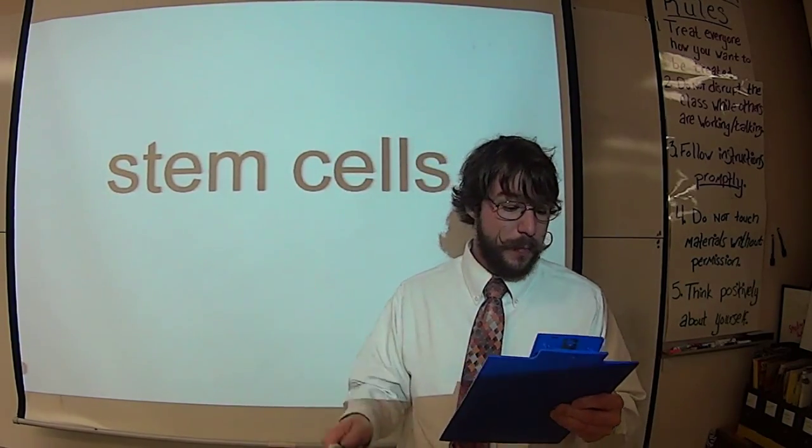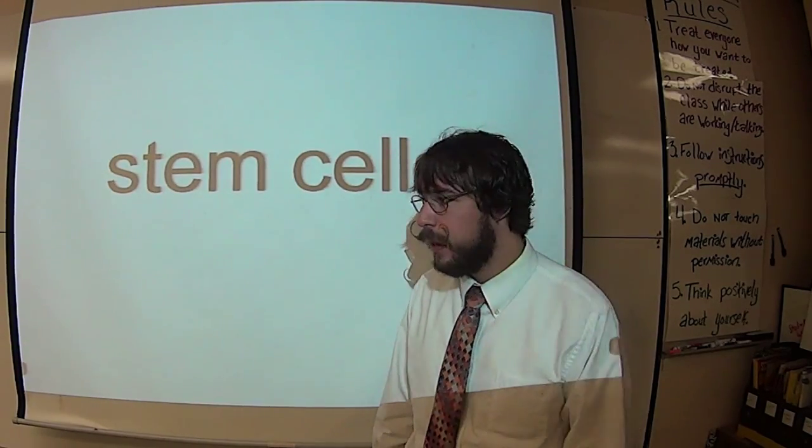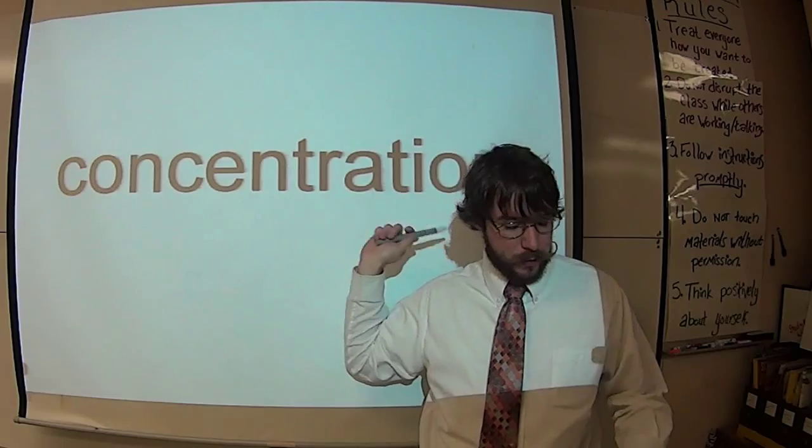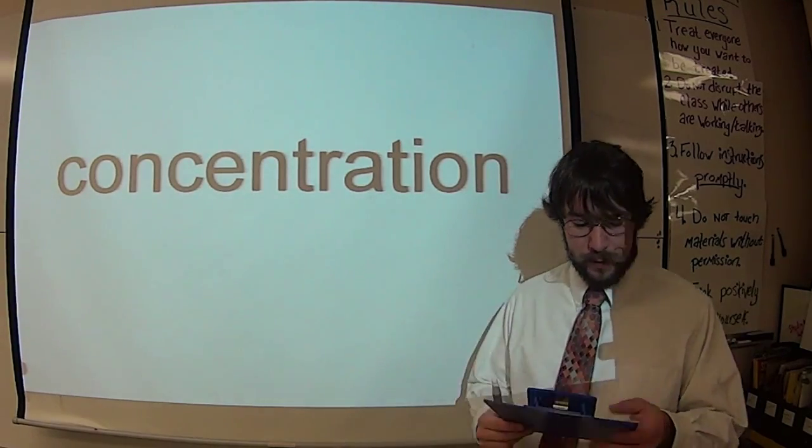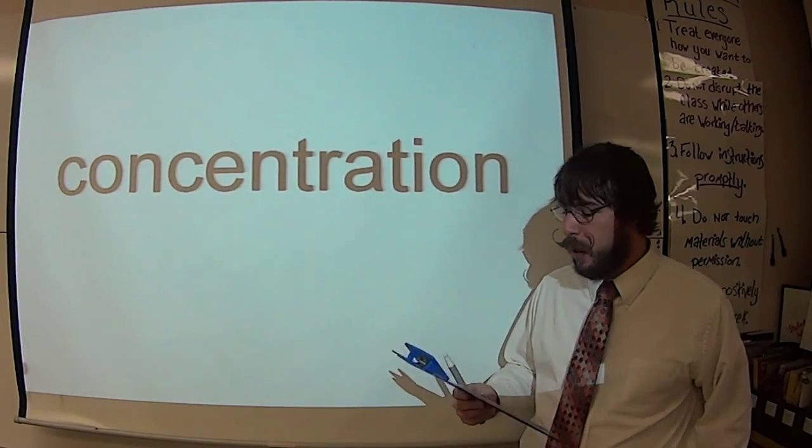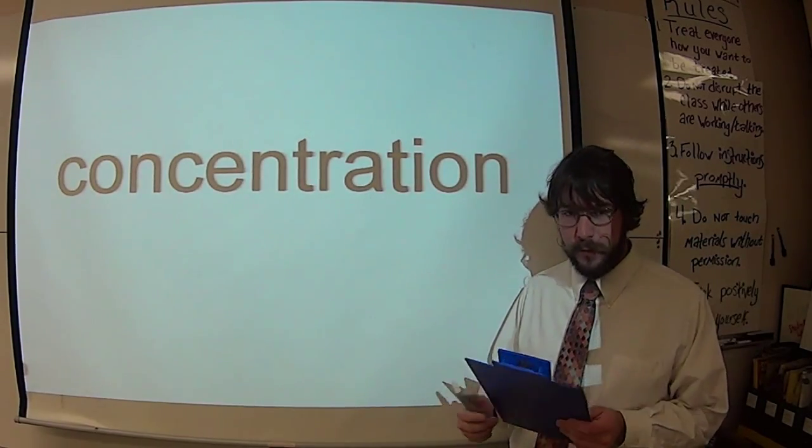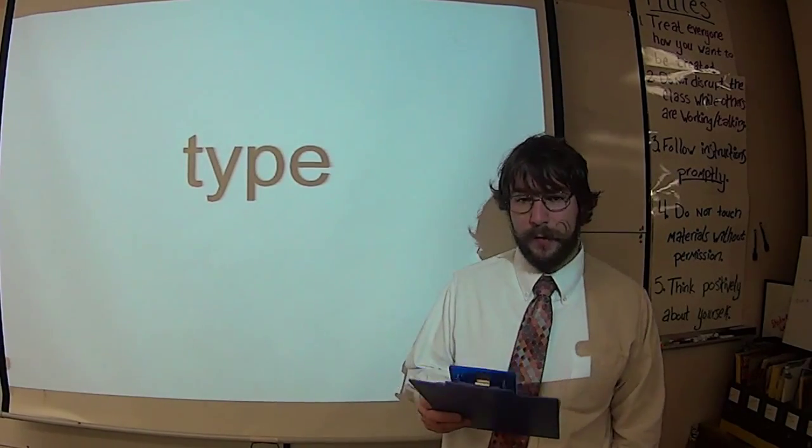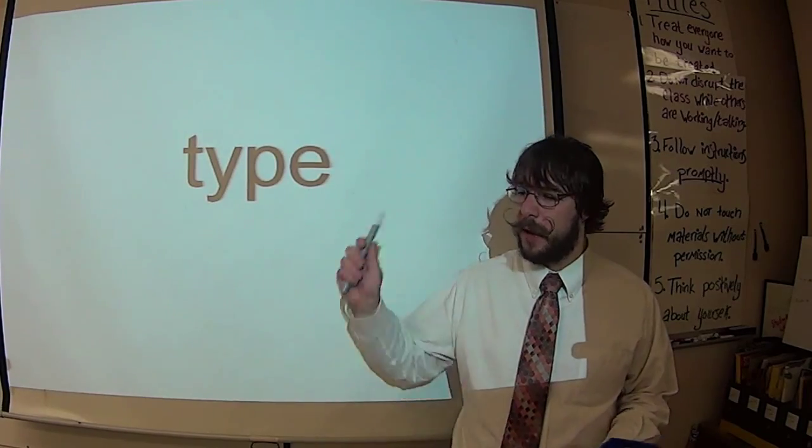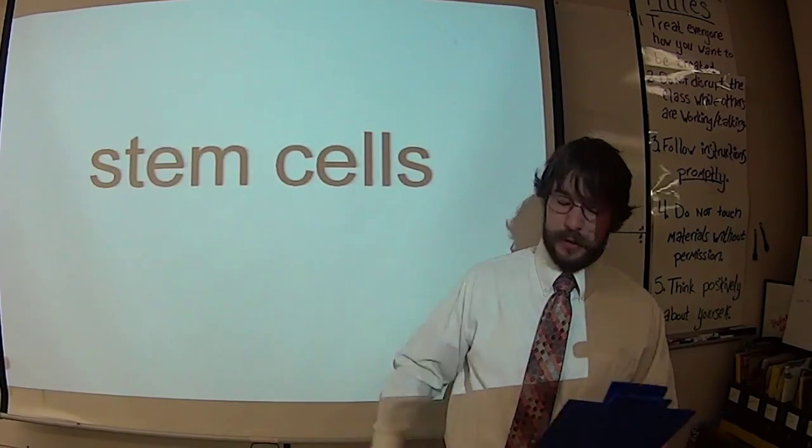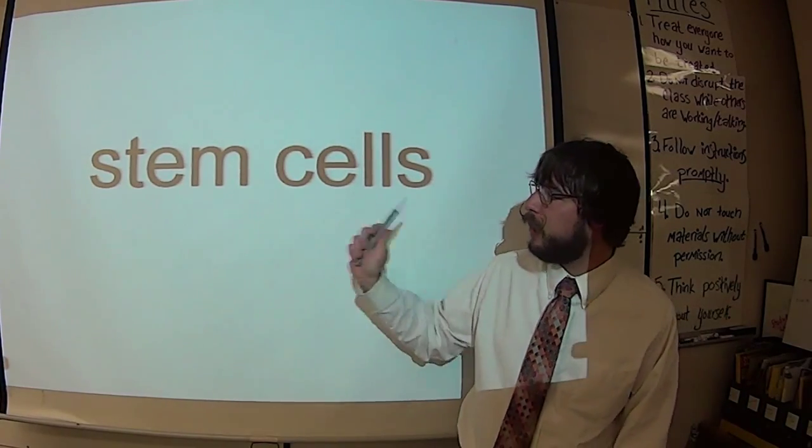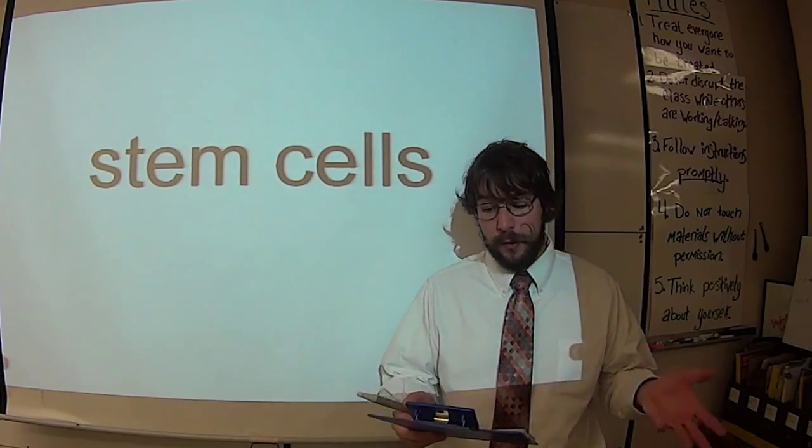The blank and this is how many of the stem cells are near each other will determine which blank of cells those blank blanks will turn into. The concentration. So the concentration, that's how many of the cells are near each other, will determine what blank of cells, what type of cells these blank blanks will turn into. What kind of cells are we talking about? Stem cells. So the concentration, how many of them are near each other, are they in a high concentration or low concentration,